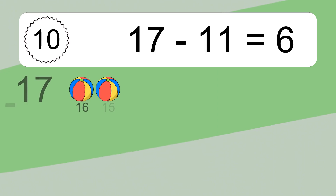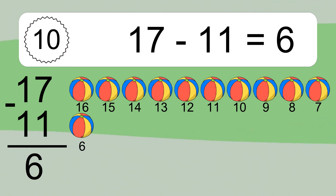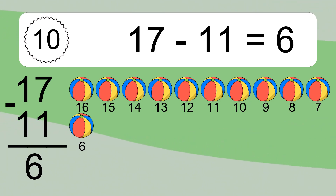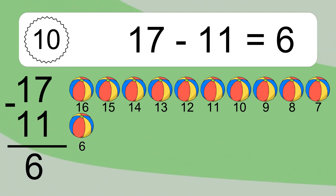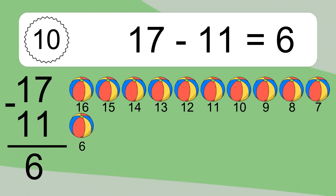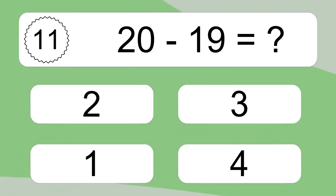17 minus 11 equals what? 17 minus 11 equals 6. Let's count it! 16, 15, 14, 13, 12, 11, 10, 9, 8, 7, 6.